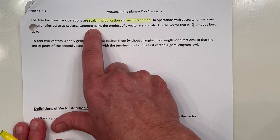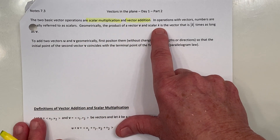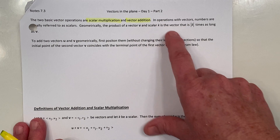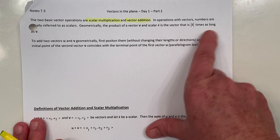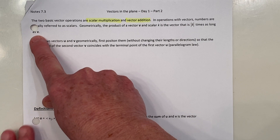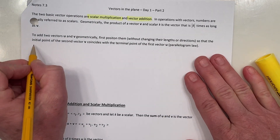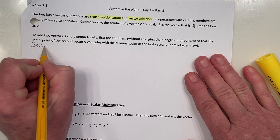Geometrically, the product of a vector v and a number, or a scalar k, is a new vector that is the absolute value of k times as long as the original vector. We're going to look at scalar multiplication geometrically in the space provided.